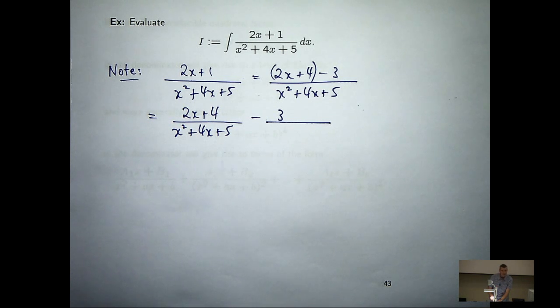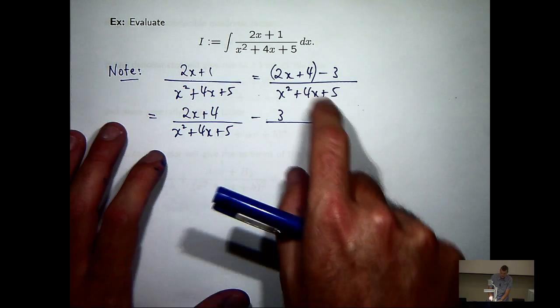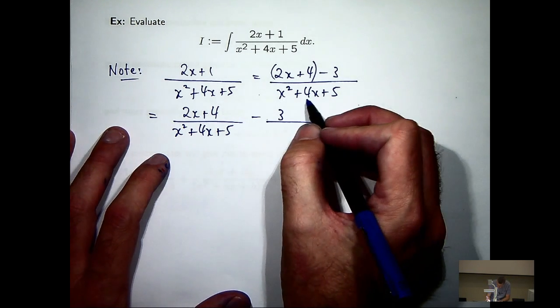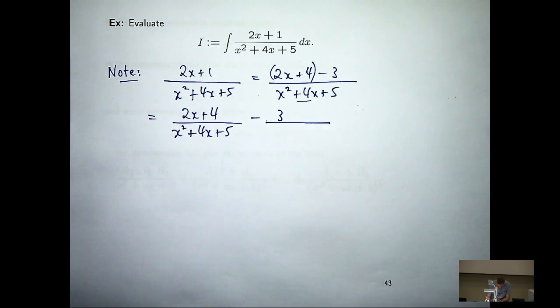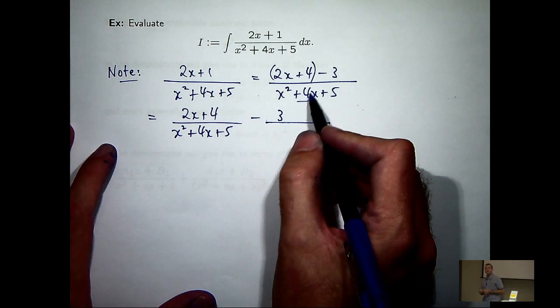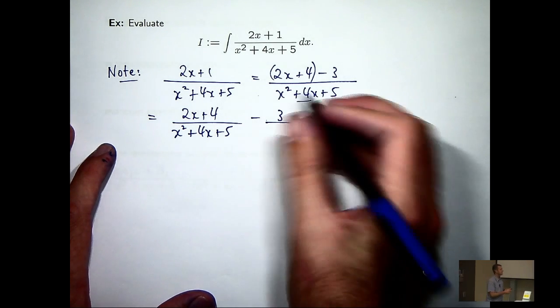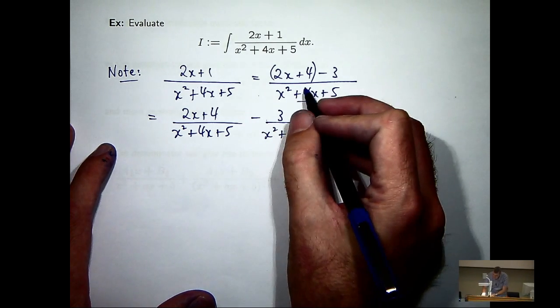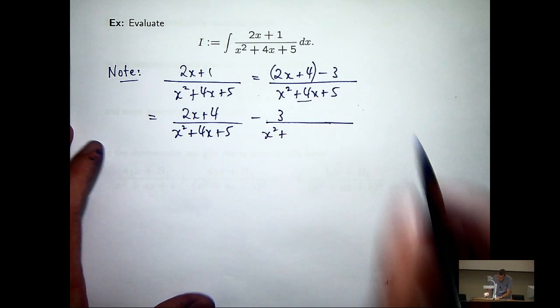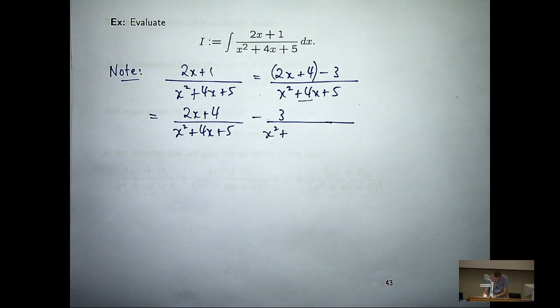So completing the square is going to be important for this second term. To complete the square you just look at the coefficient of x. That's what it's all about. You halve it, you square it and you add it and take it away. Okay so let me just, this is a positive 4, you halve it, square it, add it and take it away. Let me show you what I mean.